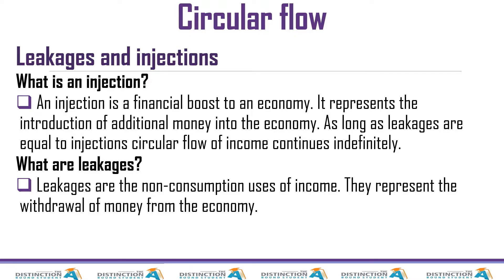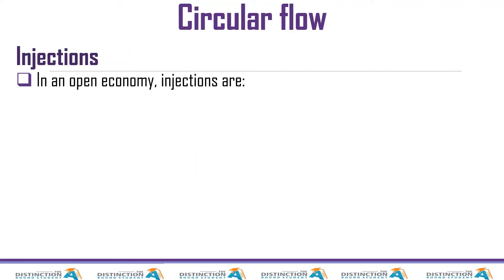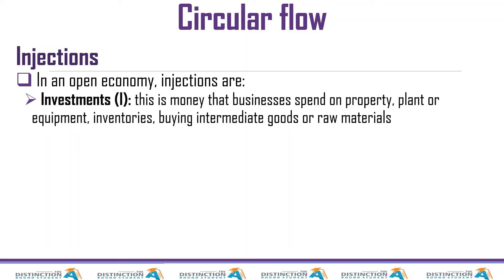Now we are going to look at our injections. In our economy we have investment — we normally say investment spending by businesses, and we use the symbol I. When businesses build new factories, when they build anything they use to make money, when they invest, we call that an injection. The question is: where is this money coming from?